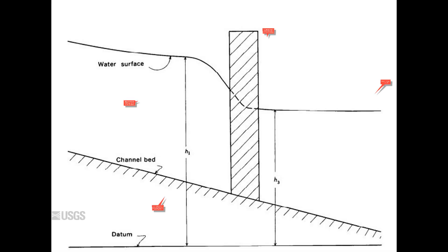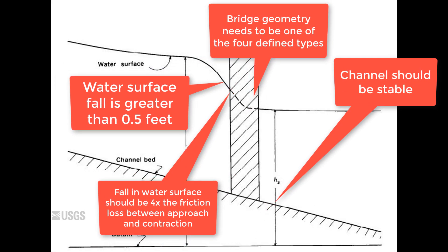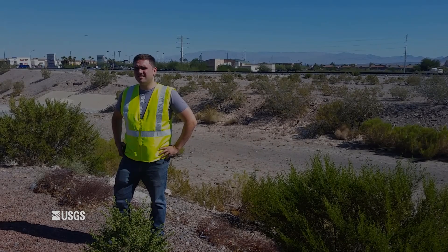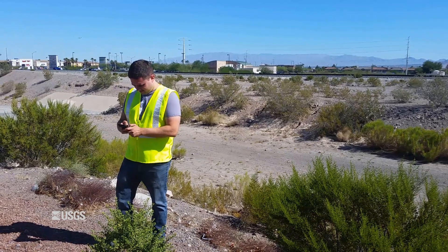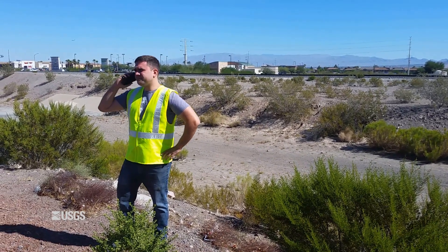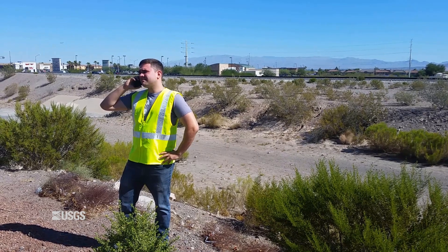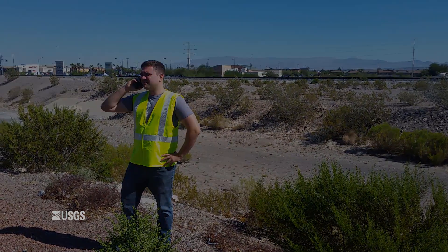If your site meets all the requirements mentioned in this video, continue on to the next video on width contraction discharge measurements, where I will discuss in more detail what geometry and additional measurements around the bridge are needed to complete the computation. If your site does not meet all the requirements explained in this video, you may want to consider choosing another indirect measurement method. If you need additional help in the field, don't hesitate to contact your field office chief, data chief, surface water specialist, or indirect measurement specialist.